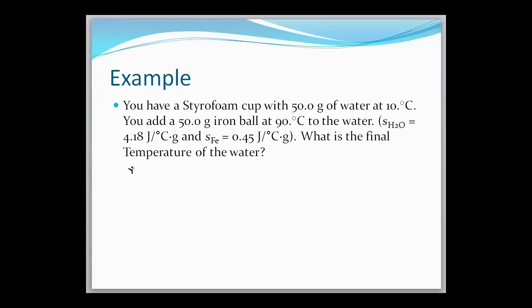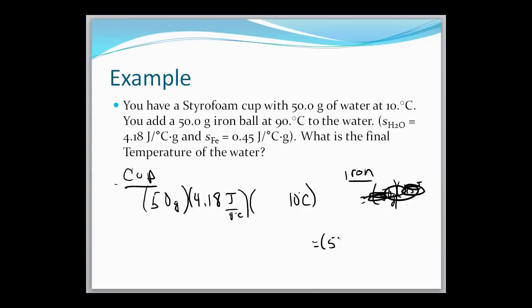So let's take a look at our problem. We've got a styrofoam cup, so I'm going to put cup and iron over here. So we've got 50 grams of water in our cup. Water has a specific heat of 4.18 joules per gram degree Celsius, and it's at 10 degrees Celsius, and we're going to add a 50 gram iron ball at 90 degrees Celsius. So over here I'm going to put 50 grams. Now we need to know what the specific heat of iron is. From our chart on the second slide we know that it's 0.45, here I need to rewrite this. So we have our 50 grams of iron, specific heat 0.45 joules per gram degree Celsius, and it's at 90 degrees.